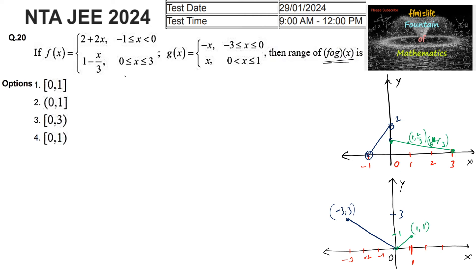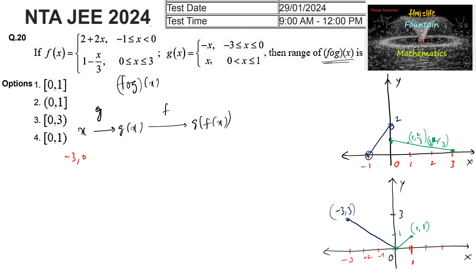Now for the function f circle g of x, we can define the composite: first the function takes x to g of x, and then applies f. When x lies between minus 3 and 0, you get negative x from g. Looking at the graph, from minus 3 to 0 the range of g is from 0 to 3. So the range of g on that interval is 0 to 3.